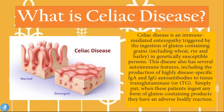So what is celiac disease? Celiac disease is an immune mediated enteropathy triggered by the ingestion of gluten containing grains, which include wheat, rye, and barley in genetically susceptible persons. The disease also has several autoimmune features including the production of highly disease specific IgA and IgG autoantibodies to tissue transglutaminase, or TTG. Simply put, when these patients ingest any form of gluten containing products, they have an adverse bodily reaction.